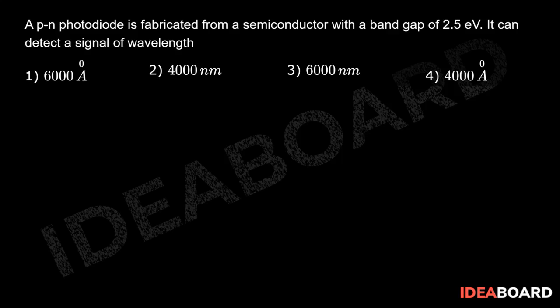The energy of a photon must be equal to the band gap, and that energy is given as 12400 by lambda in angstrom. The energy gap is given as 2.5, so 2.5 should be equal to 12400 by lambda.